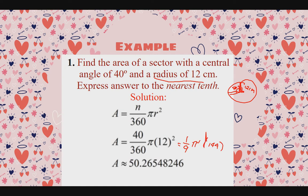From this point, we use the approximately-equal symbol (≈) instead of equals, because the value of pi is a non-terminating decimal. So, (1/9) × 3.1415... × 144 ≈ 50.26548246. Since the instruction says to express the answer to the nearest tenth, we round to one decimal place. The final answer is 50.3 square centimeters.